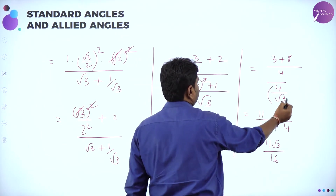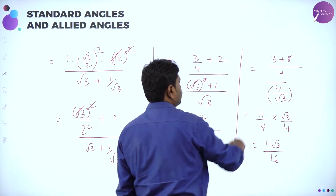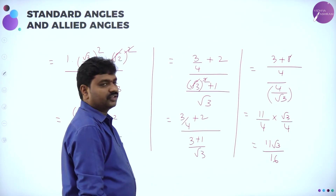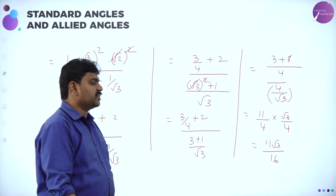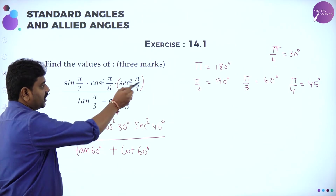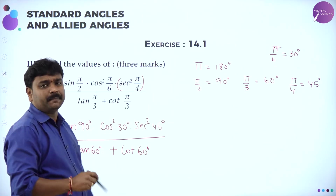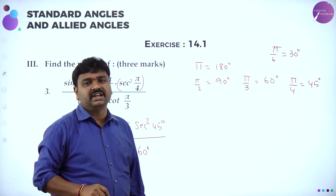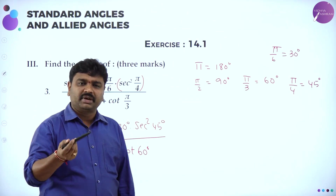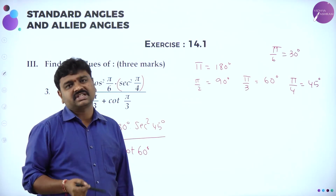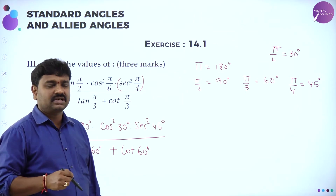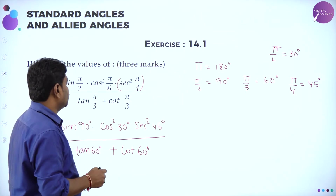So taking the reciprocal gives 11√3/16. All of you got this — taking LCM and simplifying. Converting into angles: π = 180°; π/2 = 90°; π/3 = 60°; π/4 = 45°; π/6 = 30°. Then next question.